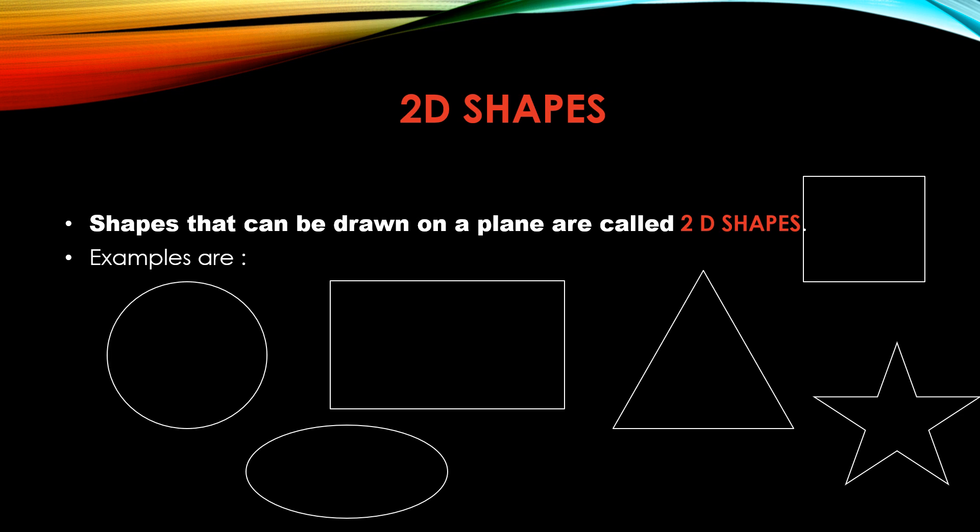Shapes that you already know like circle, rectangle, oval, triangle, square, etc. are 2D shapes.